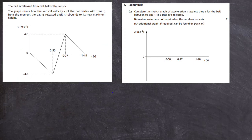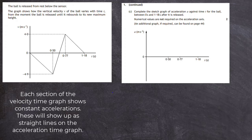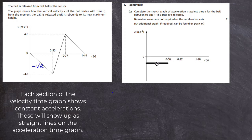The last part, Part C, asks us to sketch an acceleration-time graph corresponding to the velocity-time graph of the tennis ball — no numerical values are required. Looking at the first section of the v-t graph, the velocity is increasing in the negative direction (slope pointing downward), so this is a negative gradient, corresponding to the acceleration due to gravity. We place a horizontal line in the negative region of the acceleration graph for this first section.